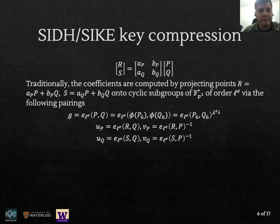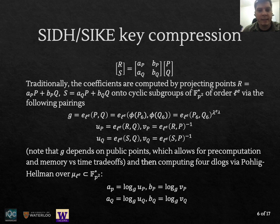And here are the five pairings suggested to do this computation. Actually the first one, the pairing G which is the pairing between the points P and Q can be precomputed because we can work out the details and see that it only depends on public parameters. But the other four need to be computed on demand. So I also have these U's and V's. Basically these are going to be elements over the finite field and then you can just use Pohlig-Hellman to solve order ℓ^e discrete logs over the finite field and then retrieve the actual four coefficients.